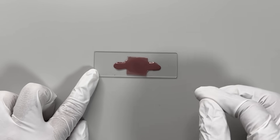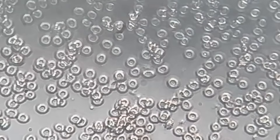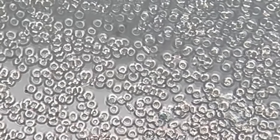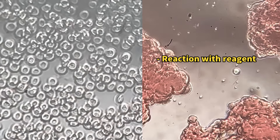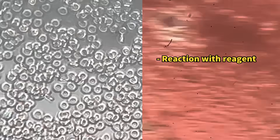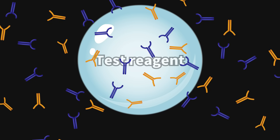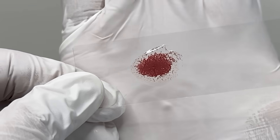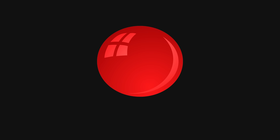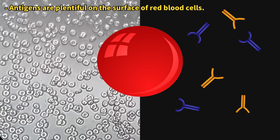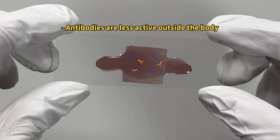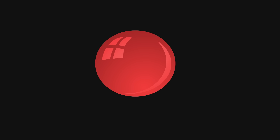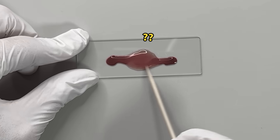Upon closer inspection under the microscope, I found partially clumped red blood cells. Interestingly, the actual blood didn't exhibit as strong an agglutination reaction as the reagent. This is because the test reagent contains a high concentration of antibodies that react strongly, whereas the antibody concentration in just one drop of blood is relatively low compared to the number of red blood cells, reducing the activity of the antibodies. Therefore, mixing a few drops outside the body does not produce a significant reaction.